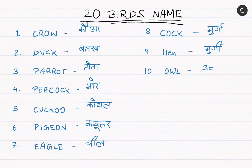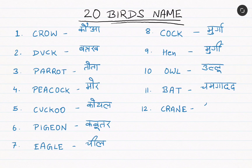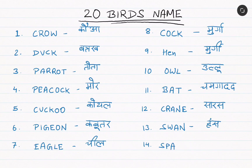Tenth, owl means ullu. Eleventh, bat means chamgadar. Twelfth, crane, that is sarrus. Thirteenth, swan, that is hunts. Fourteenth, sparrow, that is godaiya.